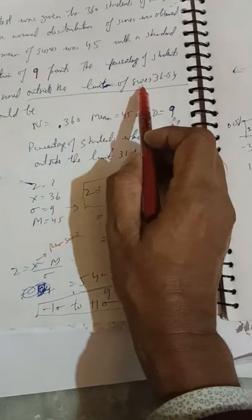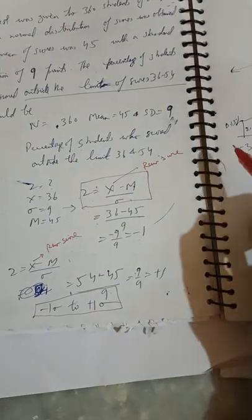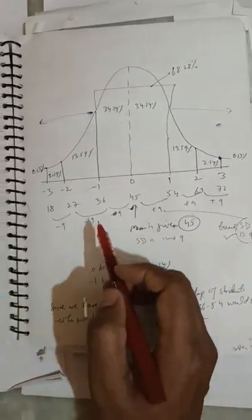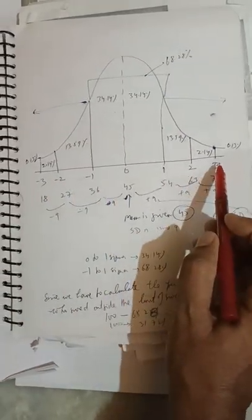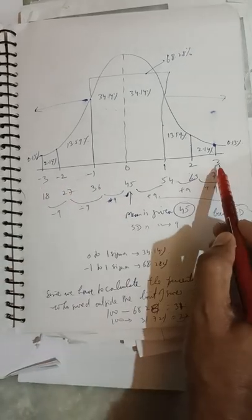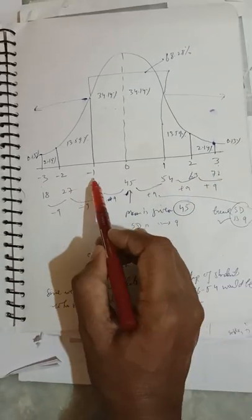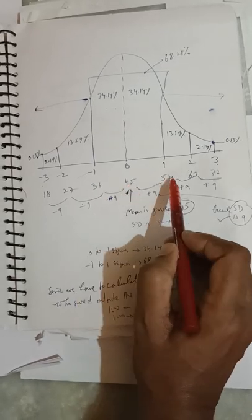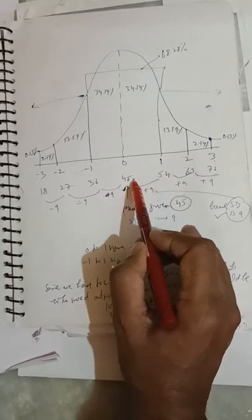Now, as you know, in the normal probability curve diagram, the limits are from -3 sigma to +3 sigma. The mean given is 45 and standard deviation is 9, so on the right side we'll have 45.